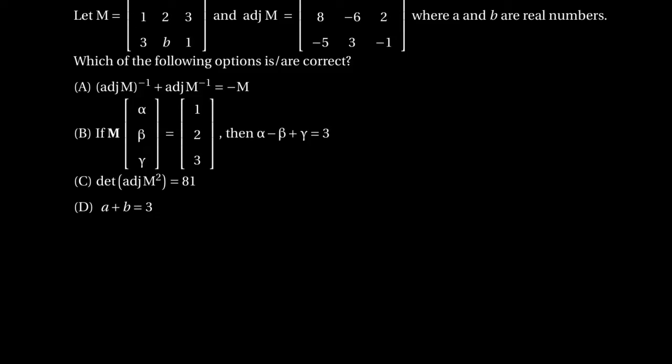Matrix M is given and adjoint of M is given, where a and b are real numbers. The options include questions on adjoint of M, finding the determinant of adjoint of M squared, finding an unknown vector alpha beta gamma, and finding the unknown quantities a and b given in matrix M.